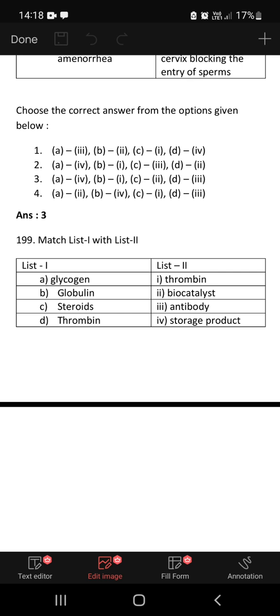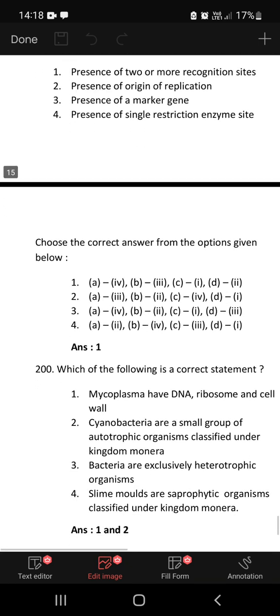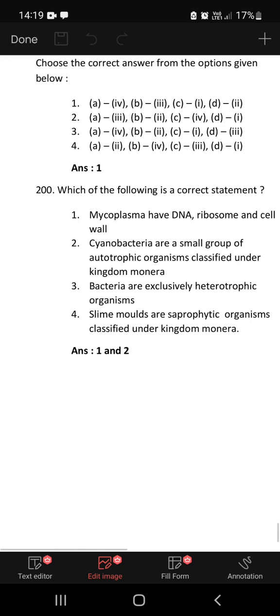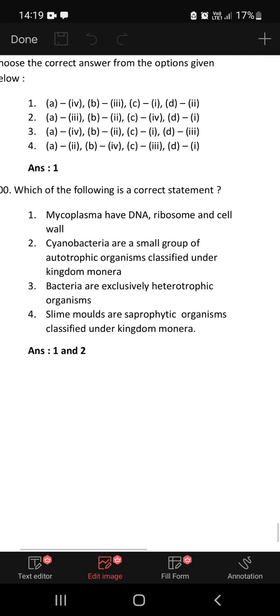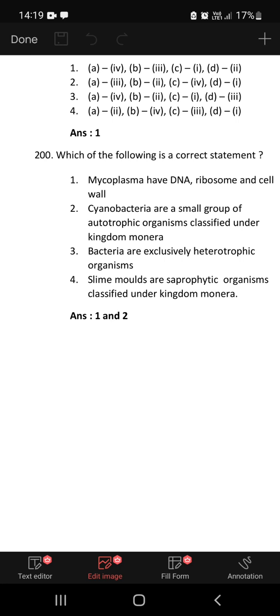199: Glycogen is a storage product, globulin is an antibody, steroids, thrombin is a biocatalyst. These options are correct. Which of the following is a correct statement? Mycoplasma have DNA, ribosome and cell wall. Cyanobacteria are a small group of autotrophic organisms classified under kingdom Monera. Bacteria are exclusively heterotrophic organisms. Slime molds are saprophytic organisms classified under kingdom Monera. The correct statement is 2, because the mycoplasma doesn't have a cell wall. So 2 is the correct statement.